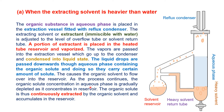As this process continues, the organic solute concentration in the aqueous phase decreases while the organic solute concentration in the solvent reservoir increases. The organic solute is thus continuously extracted — that is why this method is called continuous extraction — and accumulates in the reservoir.